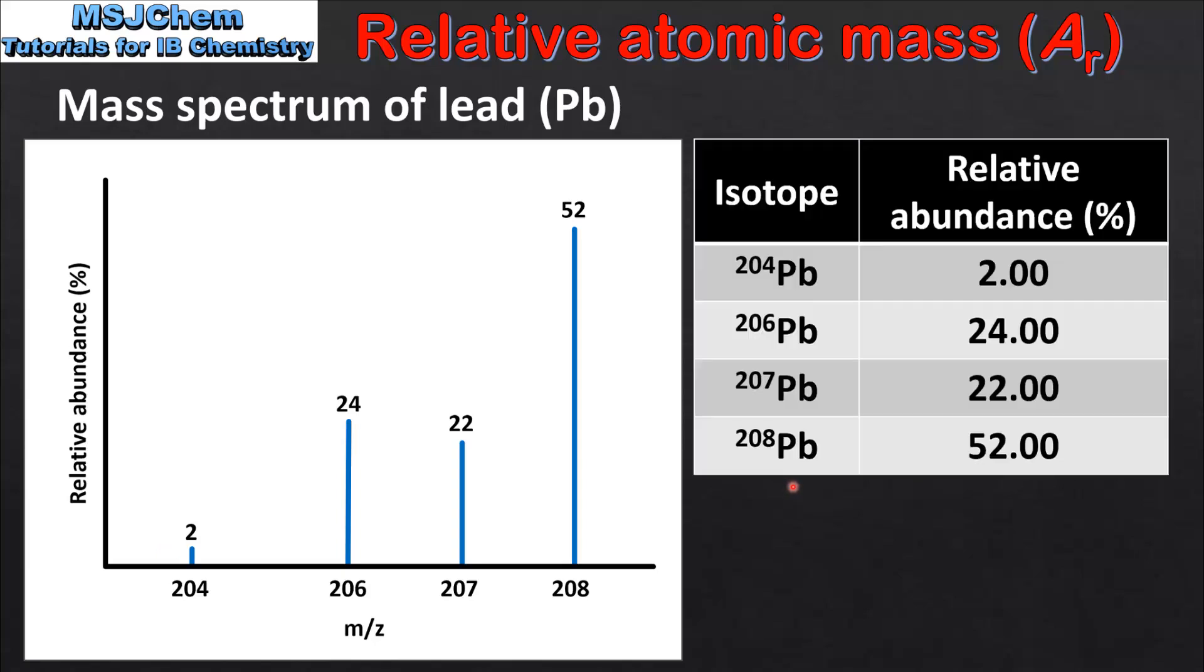On the right we can see this data summarized in table form where we have the 4 isotopes together with their relative abundances. So next we will use this data to calculate the relative atomic mass of lead.